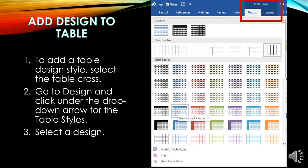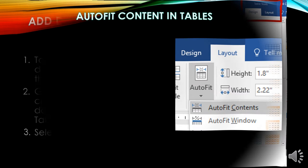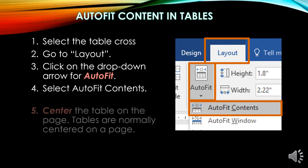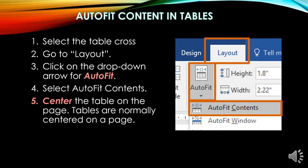To add a table design style, select the table cross, go to Table Tools Design, and click the drop-down arrow for Table Styles, then select the design you want. To auto fit contents, select the table cross, go to Layout, click the drop-down for Auto Fit, and select Auto Fit to Contents. Tables are normally centered. You can also right-click the table cross, find Auto Fit, and select Contents.